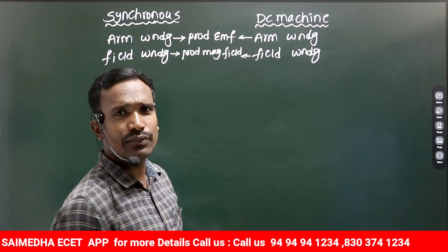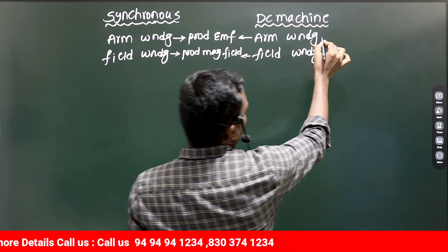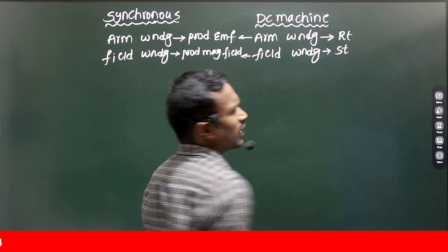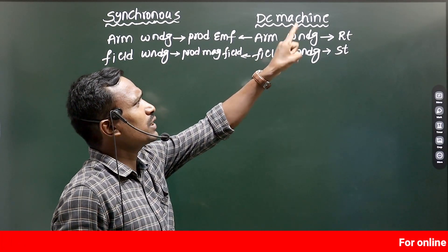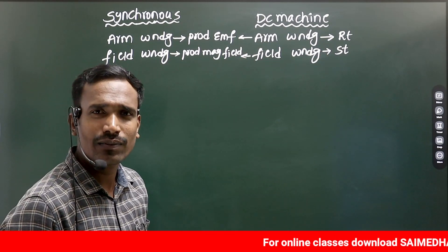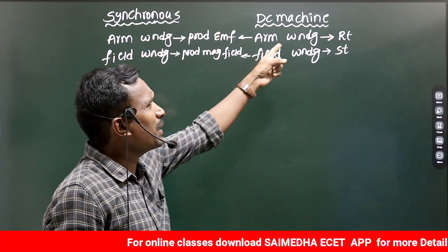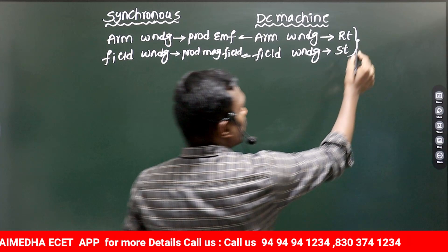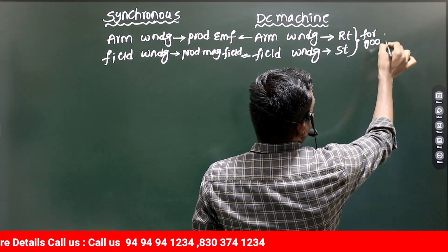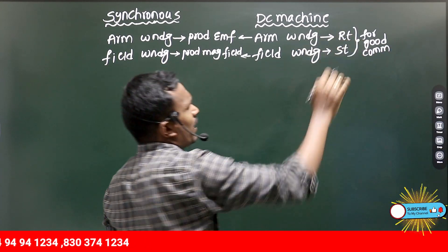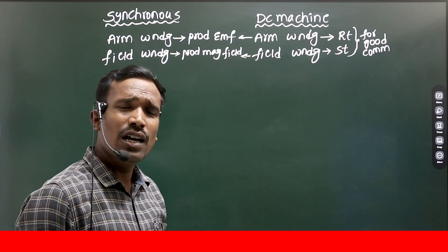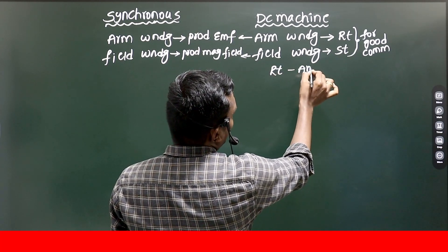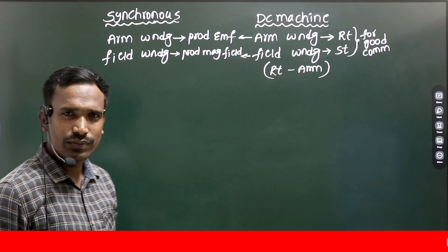In both the cases we have armature winding, but in DC machine, the armature winding must and should be placed in the rotor and the field winding is on the stator. If the armature winding is placed on the stator and field winding on the rotor, there will be no commutation process. So for good commutation, you need to place your armature winding on the rotor — DC machine has a rotating armature winding.